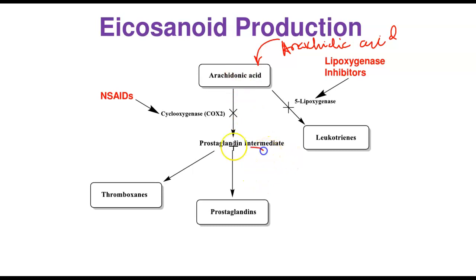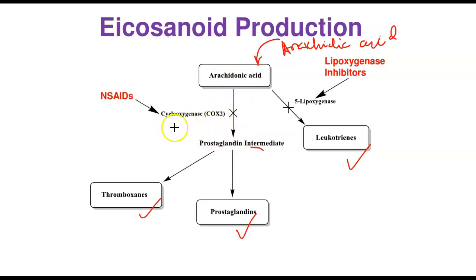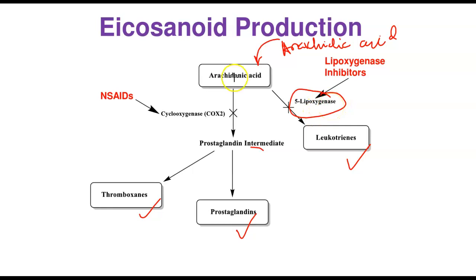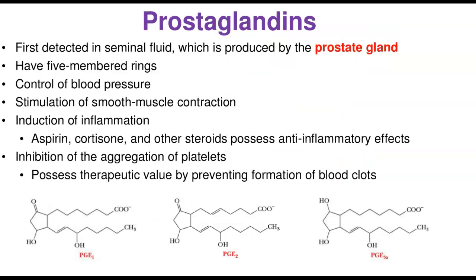Arachidonic acid can be converted to a prostaglandin intermediate by the enzyme cyclooxygenase (COX), which is then further processed to prostaglandins and thromboxanes. Non-steroidal anti-inflammatory drugs inhibit the cyclooxygenase enzyme at this step. Arachidonic acid can also be converted to leukotrienes by 5-lipoxygenase; this step can be inhibited by lipoxygenase inhibitors.